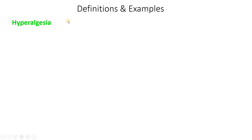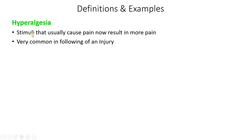Hello guys, in this video I'm going to go through what is meant by hyperalgesia and allodynia. Let's go through their definitions and examples. Hyperalgesia refers to any stimuli that usually cause pain — that cause usual pain even if you don't have any injury.